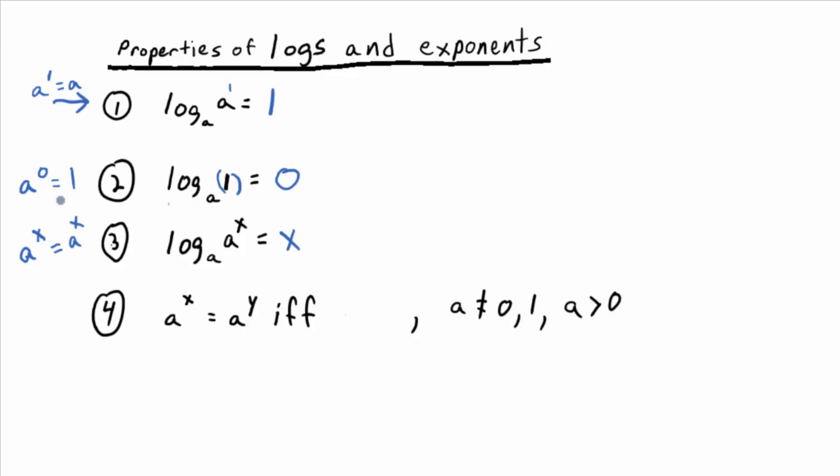All right, and then fill in, I didn't write down the blank, so let me write down the blank. Fill in the blank. Okay, if A to the X equals A to the Y, well, let's say it this way. A to the X equals A to the Y if and only if what? What do you think has to be true about the exponents? If A to the X equals A to the Y, then under the right conditions, the exponents have to be equal.